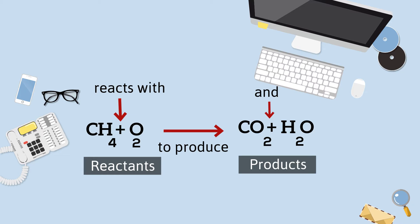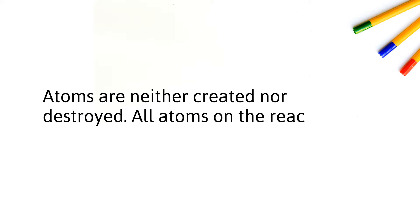In a chemical reaction, the atoms are neither created nor destroyed. All the atoms present on the reactant side must be accounted for among the product side. In other words, it must be balanced.